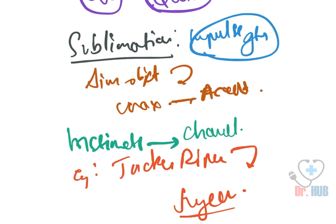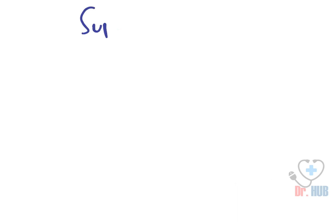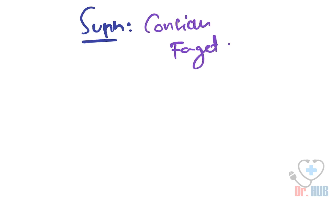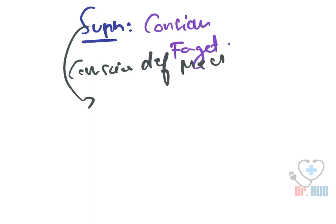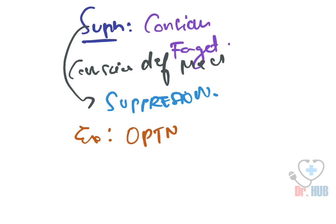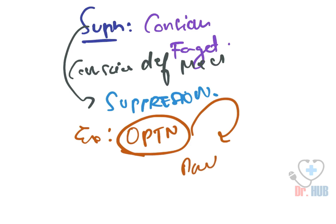Next is suppression. In suppression, there is conscious forgetting. It is the only conscious defense mechanism. An example is: 'I would rather talk about my operation after this party is over.' This is nothing but suppression — conscious forgetting.